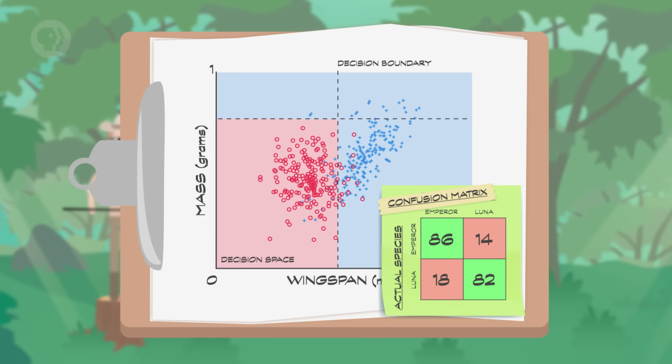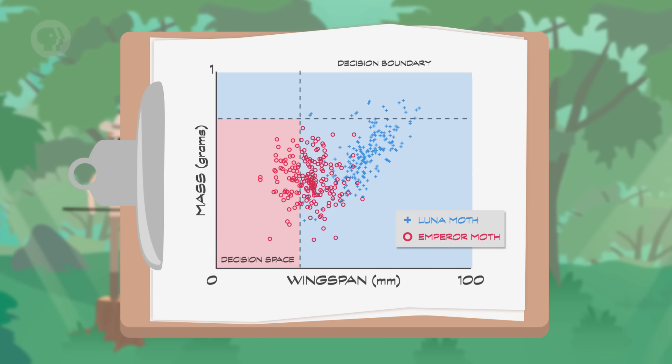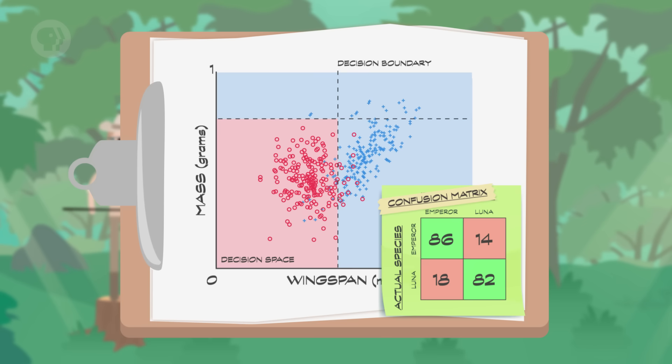Notice that there's no way for us to draw lines that give us 100% accuracy. If we lower our wingspan decision boundary, we misclassify more emperor moths as lunas. If we raise it, we misclassify more lunar moths. The job of machine learning algorithms at a high level is to maximize correct classifications, while minimizing errors. On our training data, we get 168 moths correct, and 32 moths wrong, for an average classification accuracy of 84%.